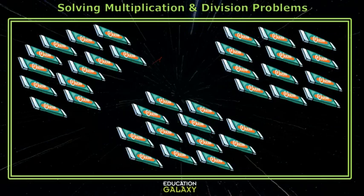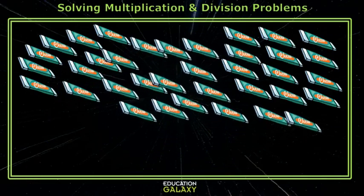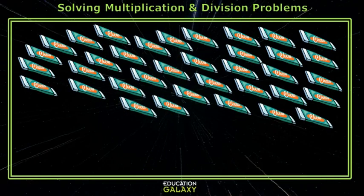Imagine opening the packs of gum and then putting all the pieces into one pile. We have to figure out how many pieces of gum there are, so you would take the 12 and multiply by three.